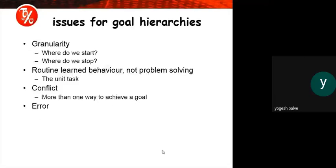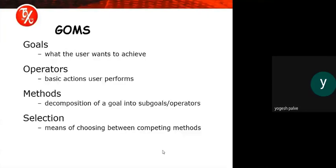What are the issues for goal hierarchies? First is granularity — where do we start and where do we stop? Routine learned behavior is not problem solving, so it is called the unit task. Then there is conflict — more than one way to achieve a goal, meaning there are different paths that lead to the same goal. And there is error — something we expected but that causes issues.